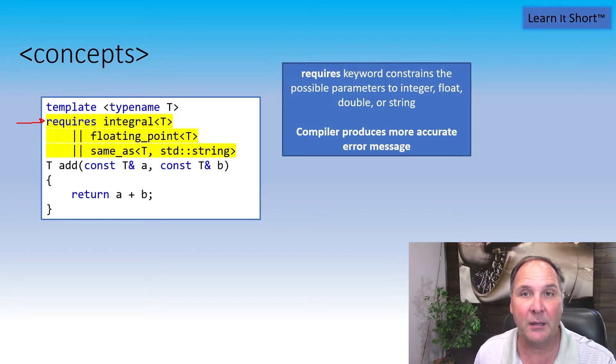Or it can be a floating point type, which includes float and double, or it can be the same as a string type. Specifying those constraints helps us get a better compiler error.